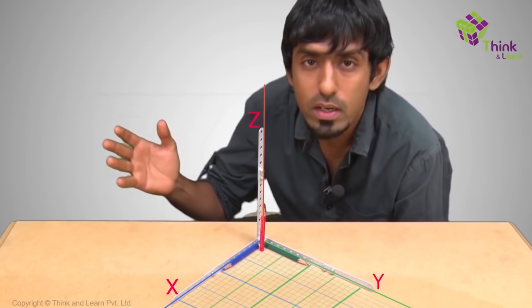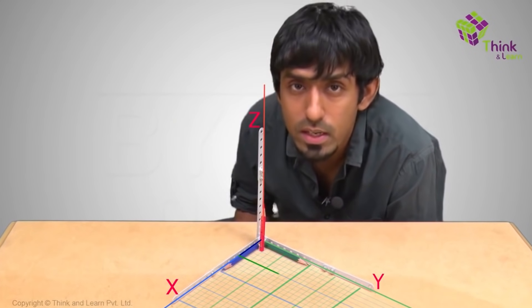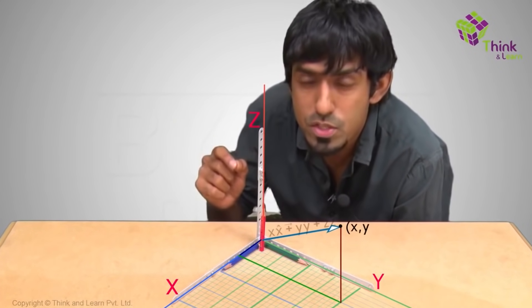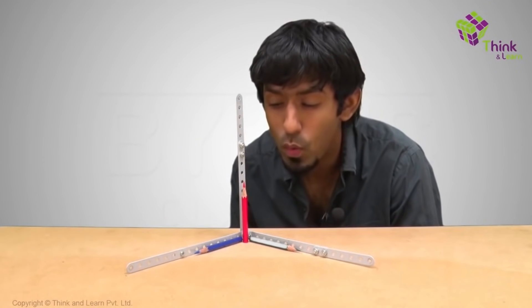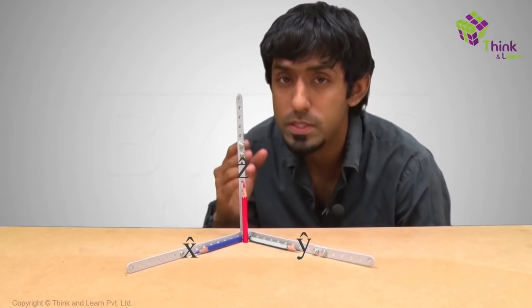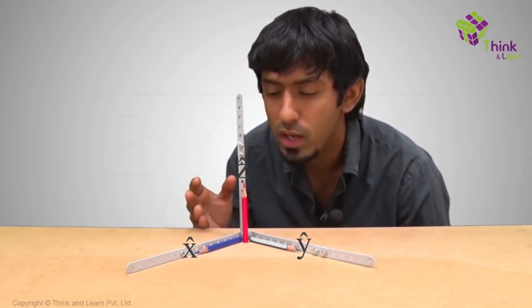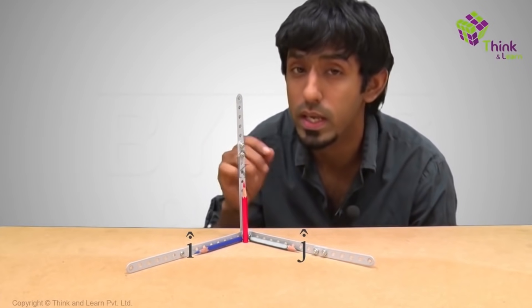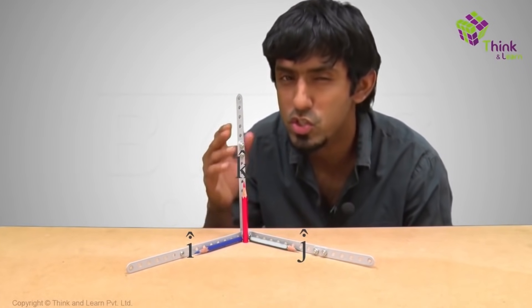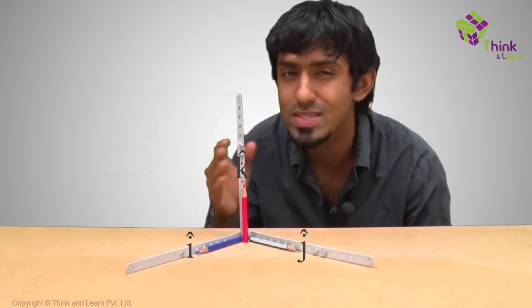So whatever I told before, right? A point x comma y comma z now becomes x times x cap plus y times y cap plus z times z cap. Now what I called x cap, y cap and z cap, I can also call i cap along the x axis, j cap along the y axis and k cap along the z axis. It's just another name to refer to the same unit vectors.